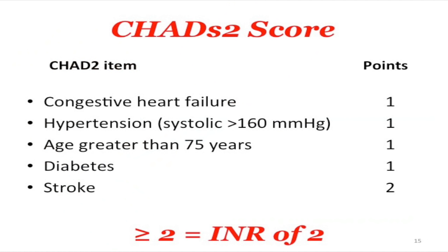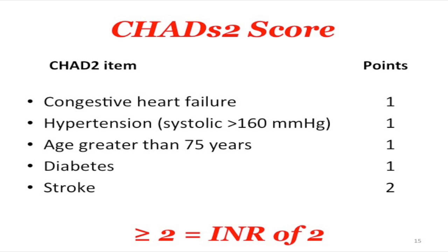Know the CHADS2 score. A CHADS2 score of two or greater means they need anticoagulation — an INR of two. CHADS stands for: Congestive heart failure, Hypertension, Age ≥75, Diabetes, Stroke — and stroke is two points. TIA counts. So if someone's ever had a TIA and is now in new AFib, they have a CHADS2 of two and need anticoagulation. If someone has a CHADS of one, they get aspirin.